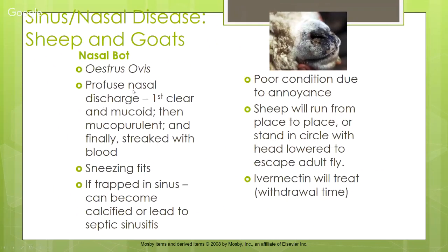In sheep and goats, nasal bot is the main concern — the larvae of the Oestrus ovis fly. It causes profuse nasal discharge, progressing from clear/mucoid to mucopurulent and finally blood-streaked, with sneezing fits. If trapped in the sinus it can become calcified or lead to septic sinusitis. Affected animals have poor condition and will run or stand with head lowered trying to escape the adult fly. Treatment is ivermectin, which has a withdrawal time before slaughter.